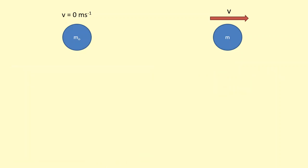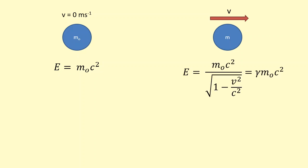It turns out that even particles which are at rest have energy. This is called the rest mass energy and is given by E equals m-naught c-squared, purely because of their mass. Particles which are moving also have this rest mass energy, but they also have energy due to their kinetic energy. The total energy of a moving particle is given by E equals gamma m-naught c-squared. You can see that the gamma m-naught part is what we called m — the apparent mass — in the previous slide.